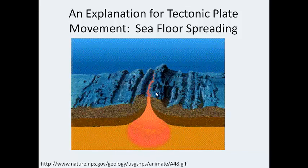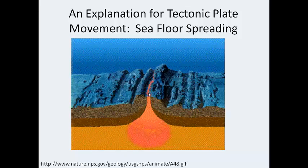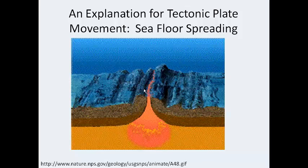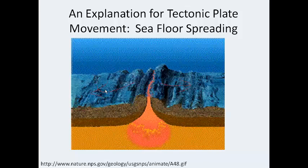At the Mid-Atlantic Ridge, magma from underneath the crust finds its way to the crust surface — which is underwater under the Atlantic. As it reaches the surface, it cools and forms new rock, which is then forced apart by more magma coming up. This causes the seafloor to spread in opposite directions, which explains why South America and Africa are being pushed apart at a rate of about 5 centimeters a year.